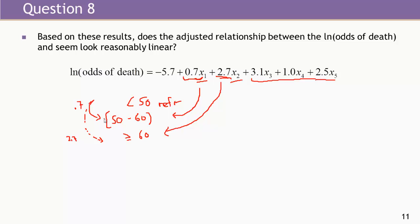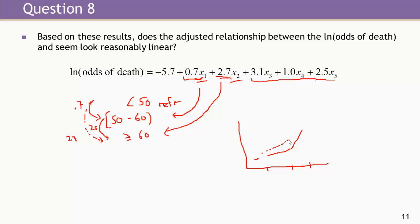So the jump from the reference to the middle age group was 0.7, but the jump from the reference to the oldest age group was 2.7 — meaning the increment from the middle to the oldest was another 2.0. While consistent in direction, it looks like the increase accelerates with older age. It does not appear strictly linear across the entire age range; we were probably overestimating the increase for younger ages and underestimating it for older ages. Based on this, I would suggest researchers keep age as categorical to better capture what's going on.